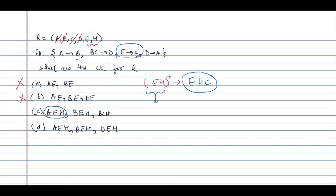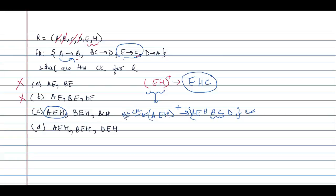Let us take the closure of AEH. A, E, H are trivial. With A we can determine B; with E we can determine C; with BC we can determine D; with D we can determine A. Therefore we can identify each and every attribute — AEH is a candidate key and also a super key.